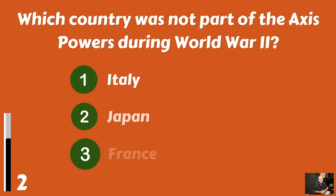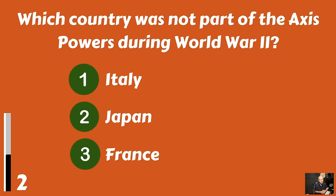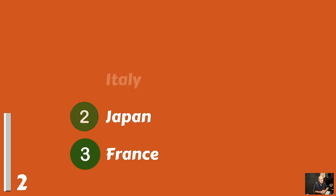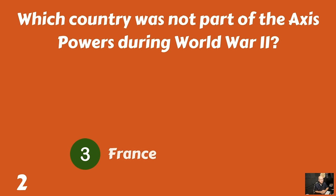Which country was not part of the Axis powers during World War II? Italy, Japan, or France? France was not an Axis power.